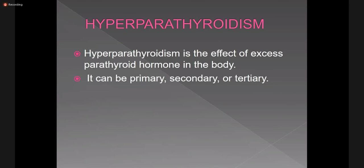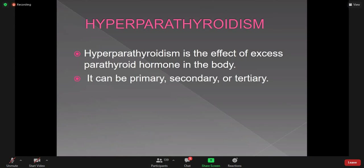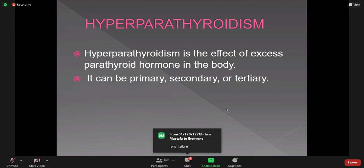The cause of secondary hyperparathyroidism: in chronic renal failure, when there is hypocalcemia, it increases secretion of parathyroid hormone leading to hyperparathyroidism. Tertiary hyperparathyroidism is due to autonomous parathyroid adenoma, which leads to increased parathyroid hormone. The radiological features of primary, secondary, and tertiary hyperparathyroidism are similar in mixture.